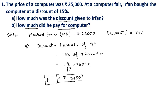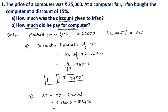Part B asks how much Irfan will pay for the computer, meaning we need to calculate the selling price. Selling Price = Marked Price − Discount = ₹25,000 − ₹3,750 = ₹21,250. So Irfan will pay ₹21,250 for the computer.